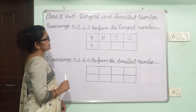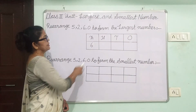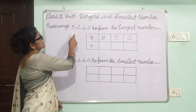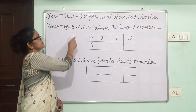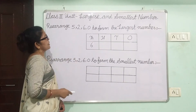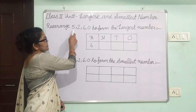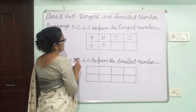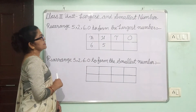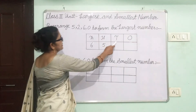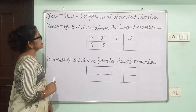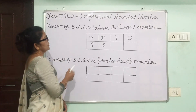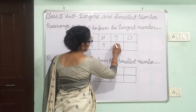Now, we will write the second largest number in the 100s place. The second largest number is 5, so 5 will go in the 100s place. Next, we will write the third largest number in the 10s place. The third largest number is 2, so 2 will go in the 10s place.